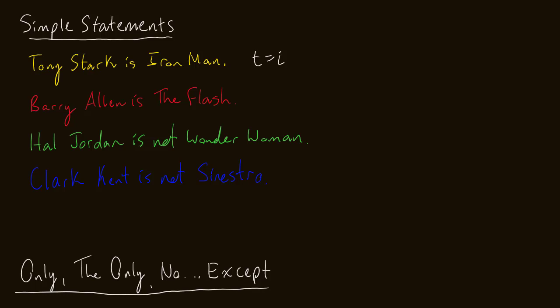Likewise, if I want to say Barry Allen is the Flash, B is equal to F — Barry Allen equals the Flash, they're the same person. Now, with a new relation, we want to think about the negation of that relation. What if I said Hal Jordan is not Wonder Woman? What you'll see us do is say Hal Jordan is not equal to Wonder Woman — that'll be our shorthand. Instead of doing Hal Jordan equals Wonder Woman and negating it, we put a slash through the equal sign. So Hal Jordan is not Wonder Woman. Likewise, Clark Kent is not Sinestro — C does not equal S.